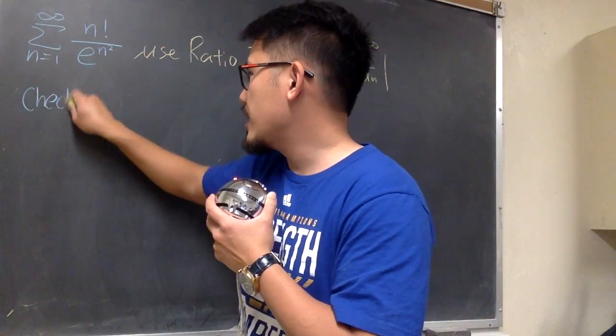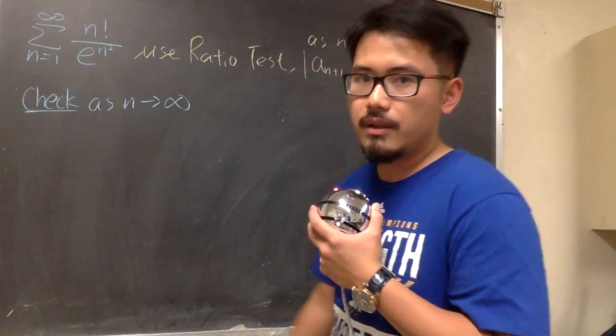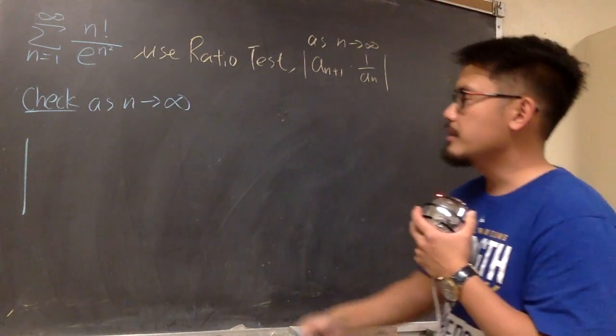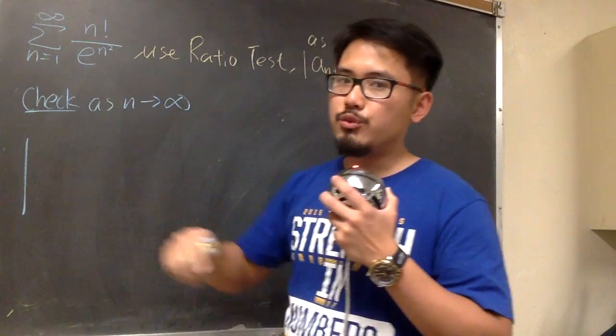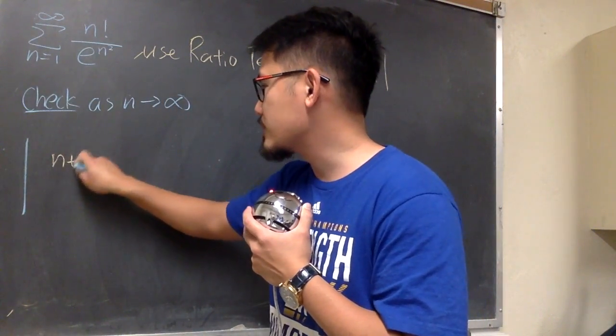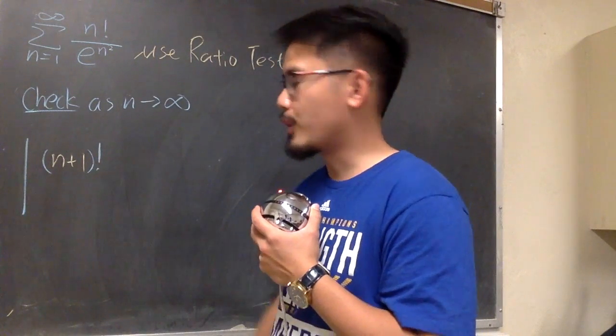Let's put down check as n goes to infinity, and let me write down the absolute value first. For the a_{n+1}, we look at this and replace all the n with n+1. On the top, we have (n+1) in a parenthesis, and then factorial.